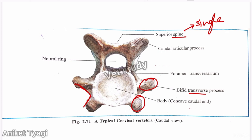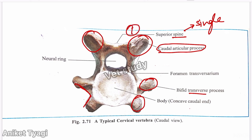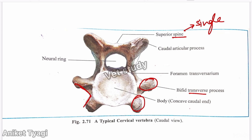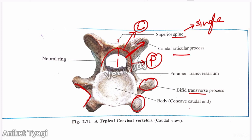The articular process plays an important role and there are two in number — one on the cranial aspect and one on the caudal aspect — because the vertebra must articulate from both sides. They are projected from the junction of the lamina and pedicle. The main function of these articular processes is to prevent undesirable movement between adjacent vertebrae.